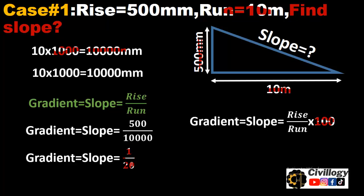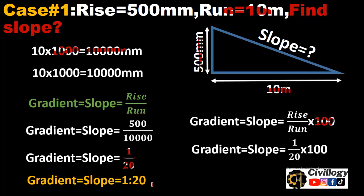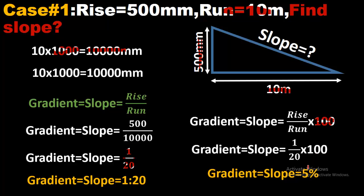So we will get this value which is 1 divided by 20, which is also expressed in the form of ratio as 1 in n, or you can say 1 vertical and 20 horizontal, 1 ratio 20. And if expressed in percentage, then multiply by 100. We will get 5 percent. So 1 in 20, or 1 ratio 20, is equal to 5 percent.